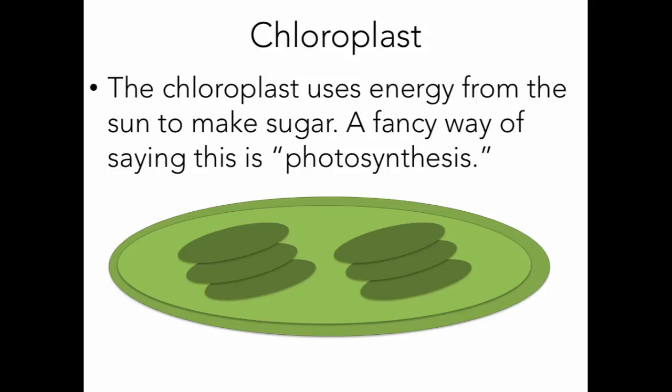Next is the chloroplast — it's like the solar panel of a cell. The chloroplast uses energy from the sun to make sugar. A fancy way of saying this is photosynthesis. Chloroplasts take energy from the sun and make sugars that serve as food for plants. Since plants don't actually eat, they make their food through photosynthesis using chloroplasts.